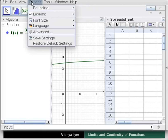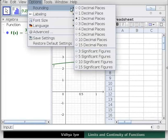Click on options, on rounding and choose 5 decimal places.